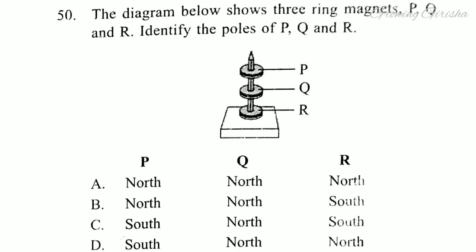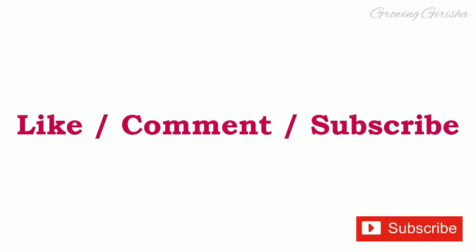Question 50. The diagram below shows three ring magnets P, Q, and R. Identify the poles of P, Q, and R. Answer is option C: South, North, South. Thank you for watching.